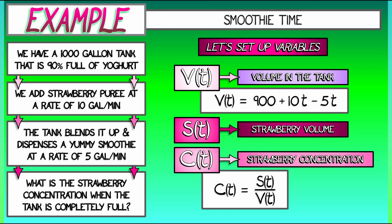And when this problem asks for the concentration when the tank is completely full, what is that? Well, let's see. It starts off at 900 gallons. How much time does it take to get to 1,000? That's 20. So I'm really looking for C of 20. That's the thing I'm trying to compute. How do we do that?